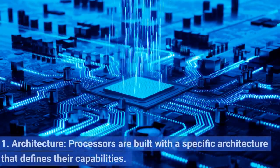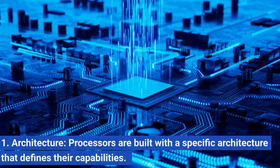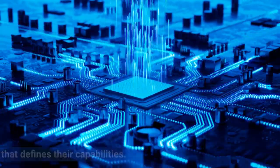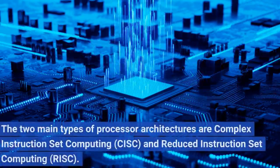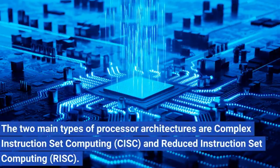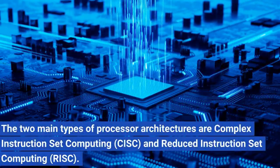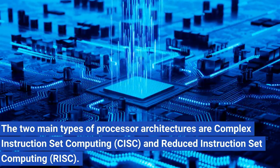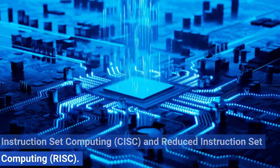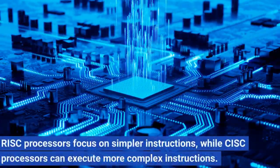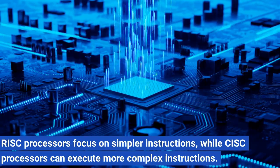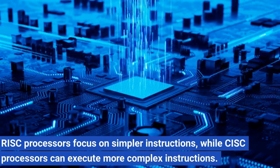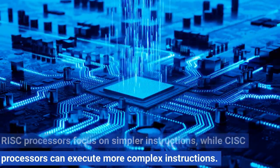1. Architecture. Processors are built with a specific architecture that defines their capabilities. The two main types of processor architectures are complex instruction set computing, CISC, and reduced instruction set computing, RISC. RISC processors focus on simpler instructions, while CISC processors can execute more complex instructions.